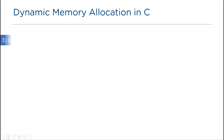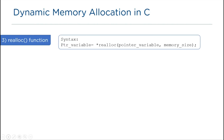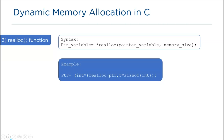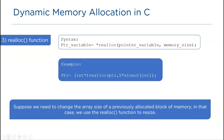Next we have the realloc function. The syntax is: pointer_variable = realloc(pointer_variable, memory_size). We pass the pointer variable and the memory size as arguments — for example, realloc(ptr, sizeof(int)). Sometimes it becomes very difficult to change the array size when storing new values or copying into a larger array. In that case we use realloc to change the array size without losing the existing data. In short, realloc changes the size of a previously allocated block of memory.